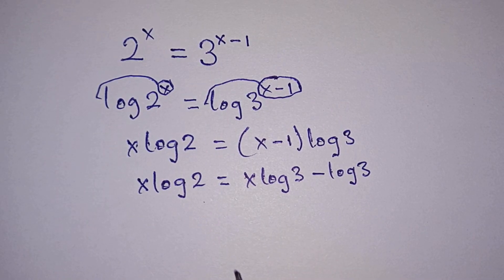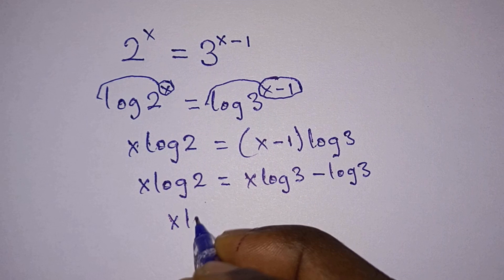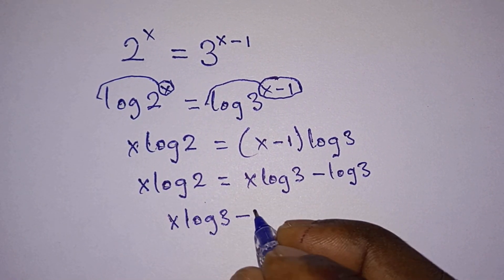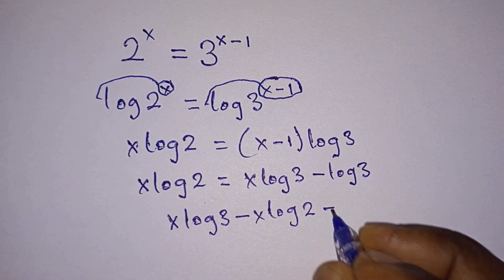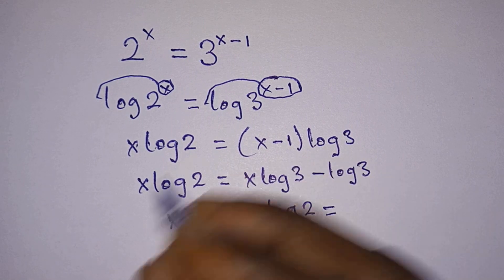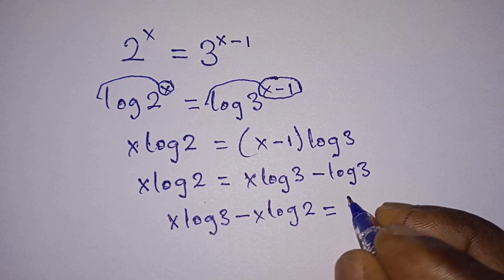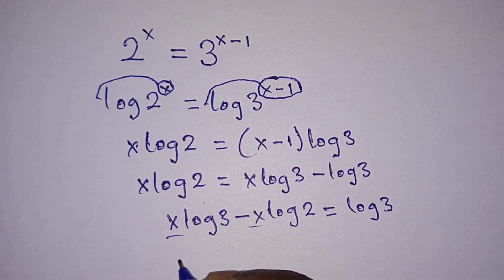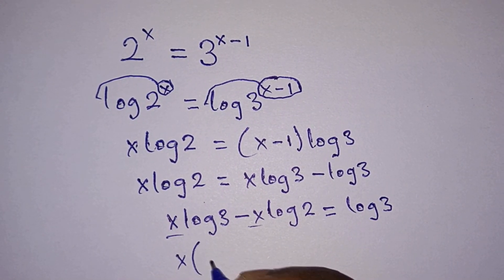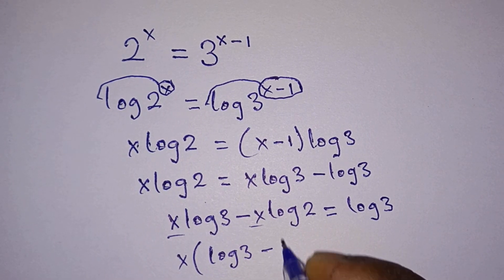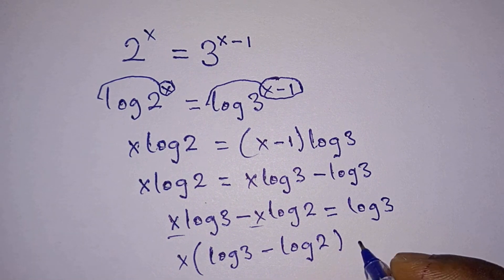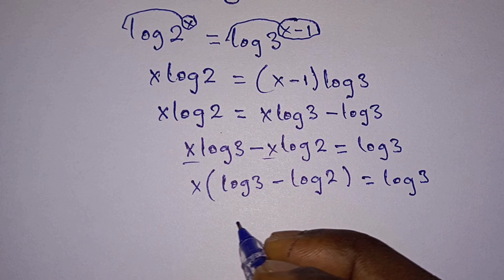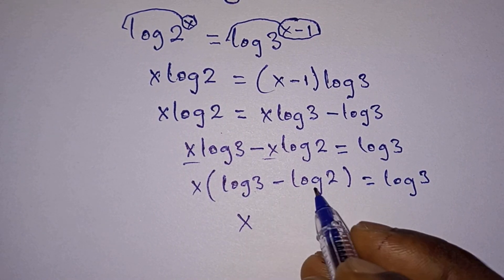Let's rearrange the equation nicely. We bring x·log3 to the left and move x·log2 across, giving us x·log3 minus x·log2 equals log3. We have x in both terms, so we factor it out: x times (log3 minus log2) equals log3.